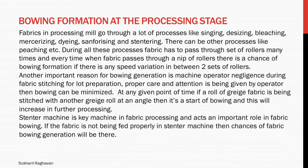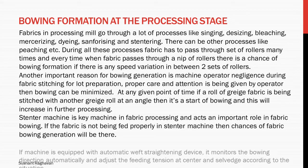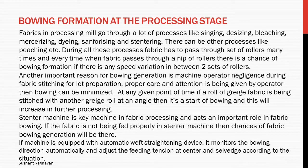The stentering machine is a key machine in fabric processing and plays an important role in fabric bowing. If the fabric is not fed properly into the stentering machine, chances of fabric bowing generation will be there. If the machine is equipped with an automatic web straightening device, it monitors the bowing direction automatically and adjusts the feeding tension at center and selvedge according to the situation.